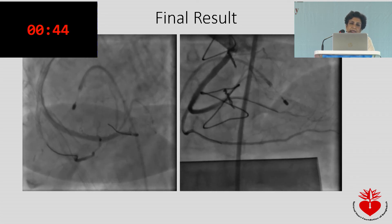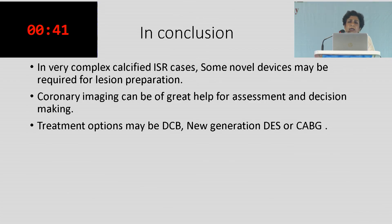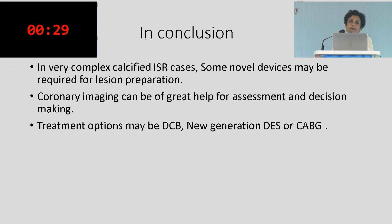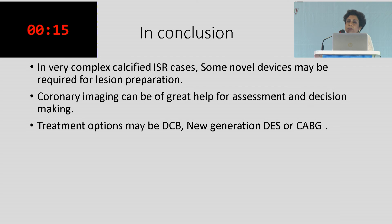This patient is doing well, and we would not have achieved this result without rotablation. In conclusion, for very complex calcified in-stent restenosis cases, we need devices like rotational atherectomy, intravascular lithotripsy, and scoring balloons for proper lesion preparation. Treatment options include a drug-coated balloon or a new-generation drug-eluting stent. For multiple recurrent ISR episodes, CABG may be the better choice. Coronary imaging is essential to determine the appropriate treatment and tools. Thank you.